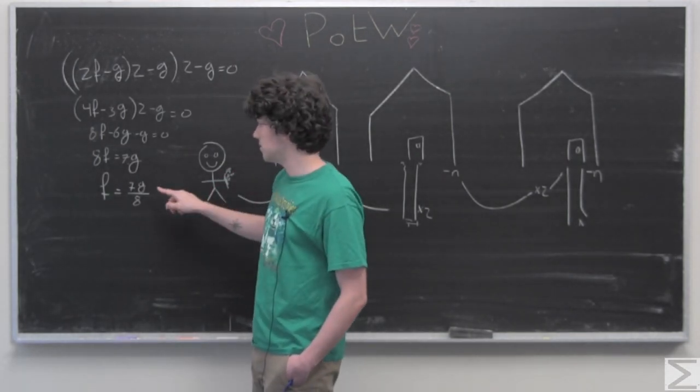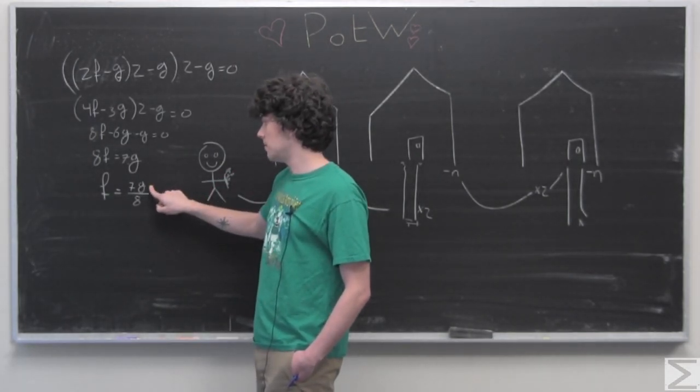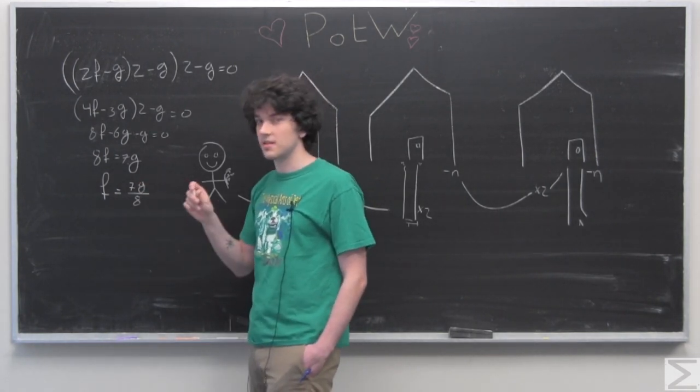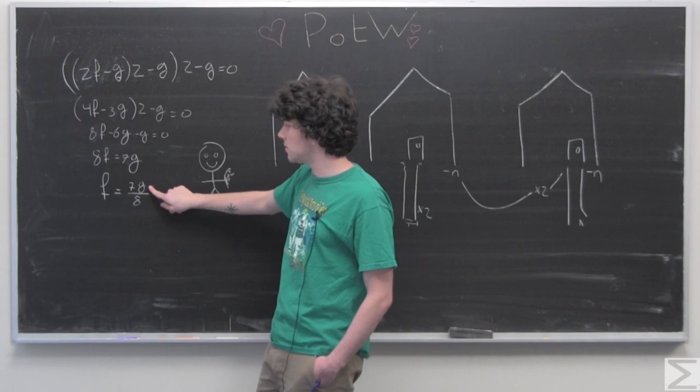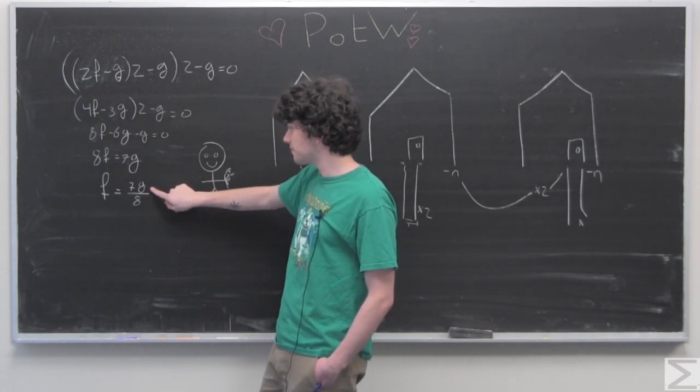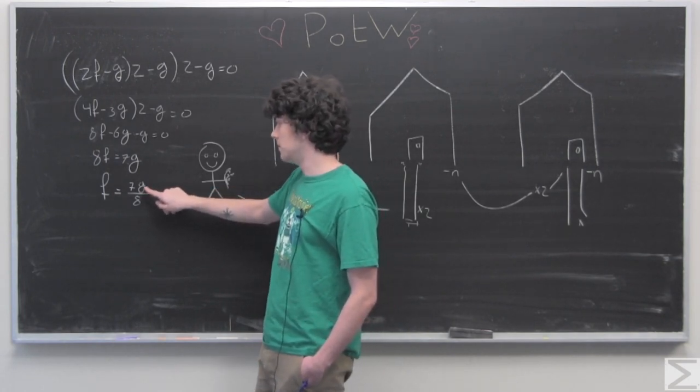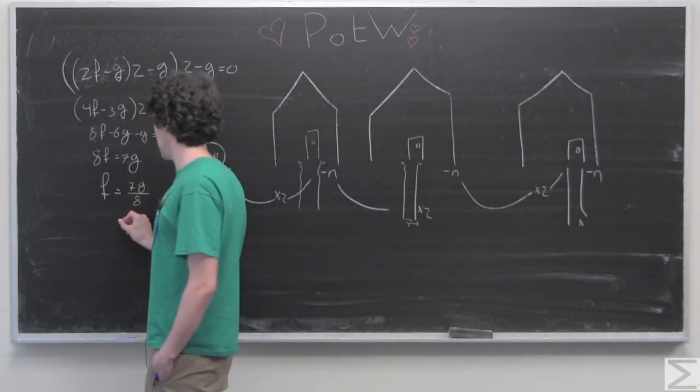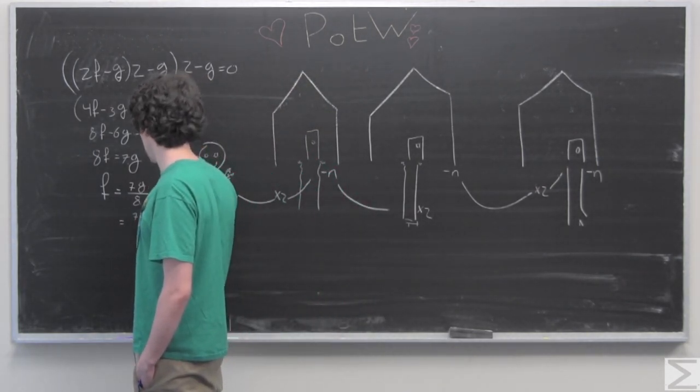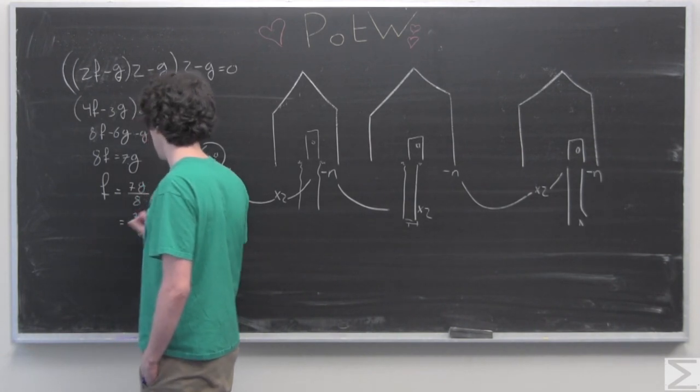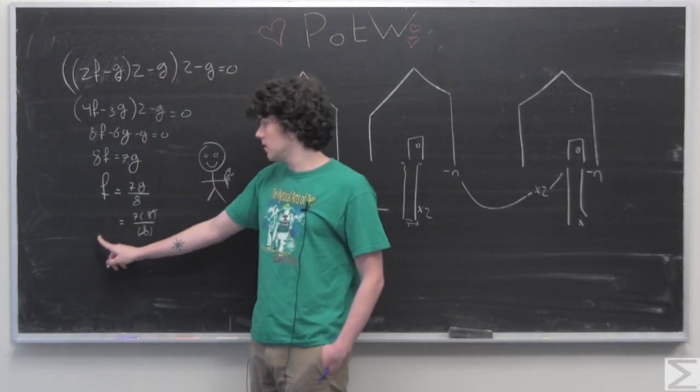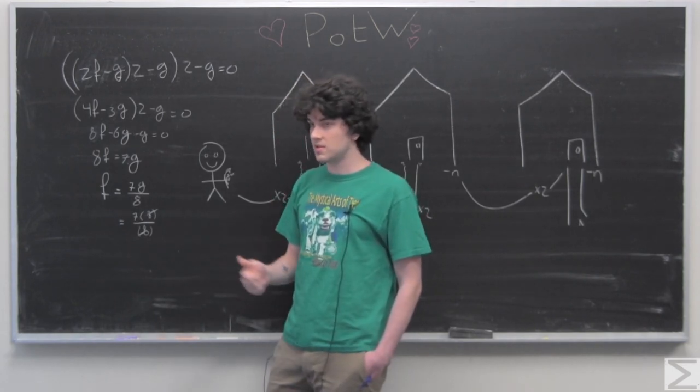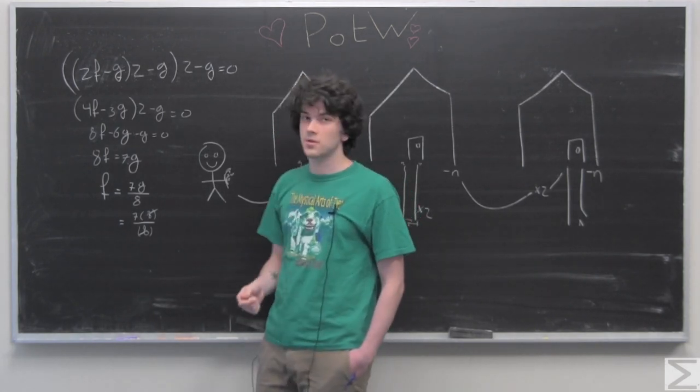So one solution would be to give 8 flowers to each date, meaning you'd have to start with 7 flowers. You could also give 16 and start with 14 flowers.